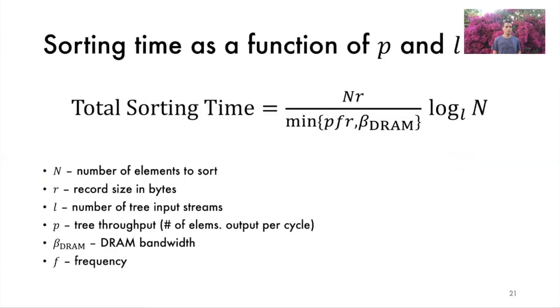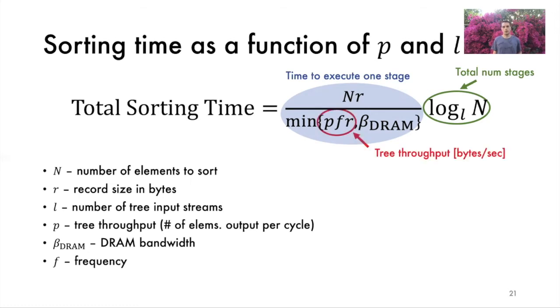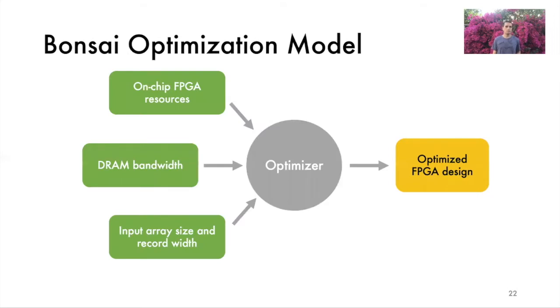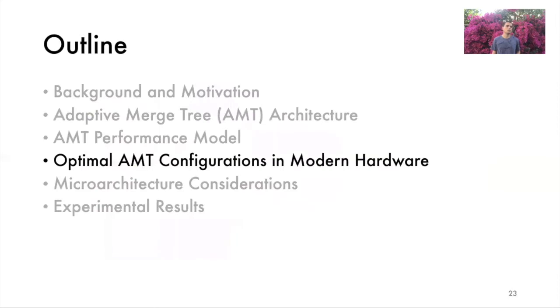Therefore, we want to first increase tree throughput to match the bandwidth of DRAM and then increase the tree Arity as much as possible. The sorting time is equal to the time it takes to finish one stage multiplied by the total number of stages. The part in green is the total number of stages and the part in blue is the time to execute a single stage. It is equal to the number of bytes in the array divided by the throughput of the merging stage. This throughput is equal to the minimum of the throughput of the merge tree and the DRAM bandwidth. In summary, the optimizer takes the available FPGA resources, DRAM bandwidth and input array size and record width as inputs and outputs the optimized merge tree design. Formally, the optimizer solves a constraint optimization problem.